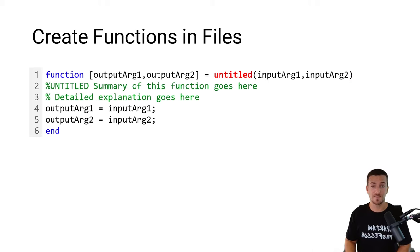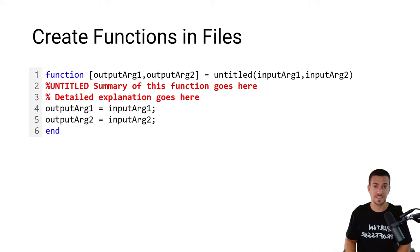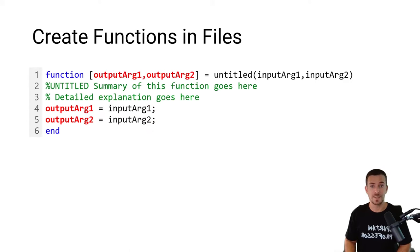Below the function definition line, we have a comment section where we provide a summary of the function as well as a detailed explanation of the input and output arguments. Below the comment section, we have the calculation section where the output arguments are computed based on the values of the input arguments. Our function file ends with the keyword end, and that's it. Let's take a look at our first example problem.